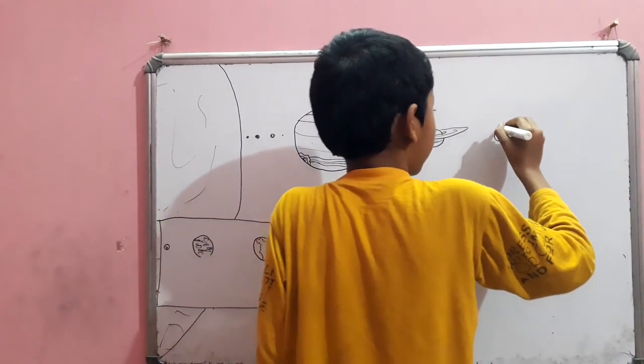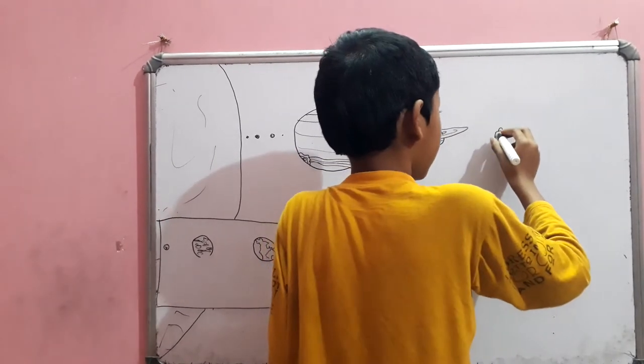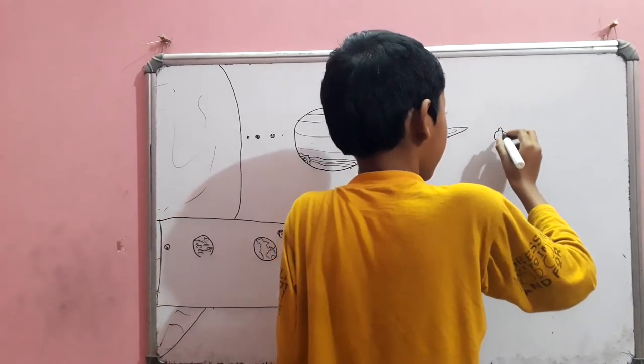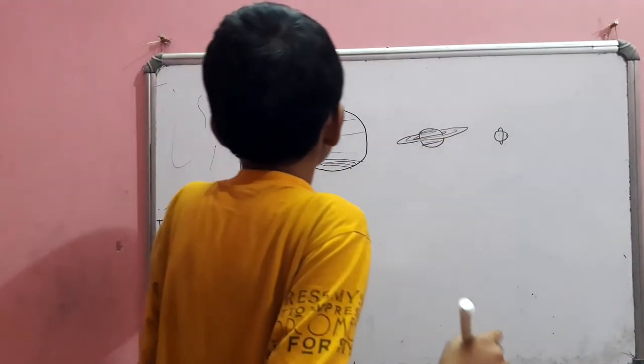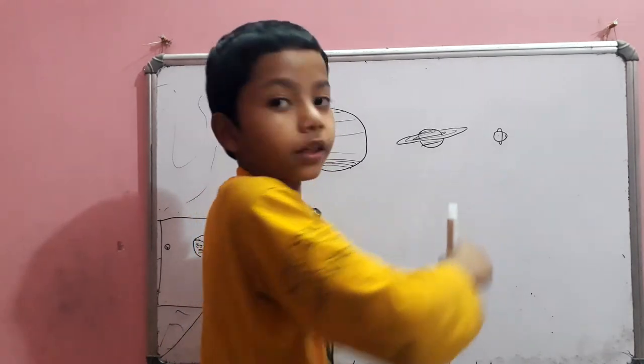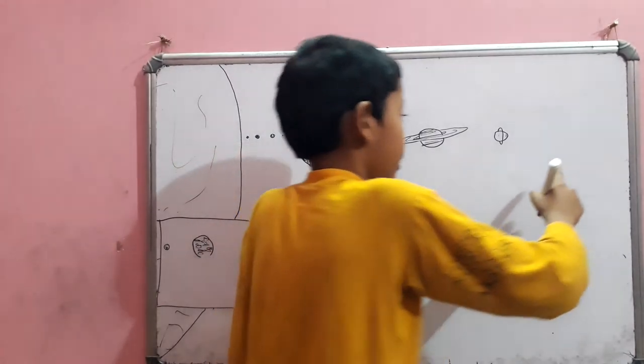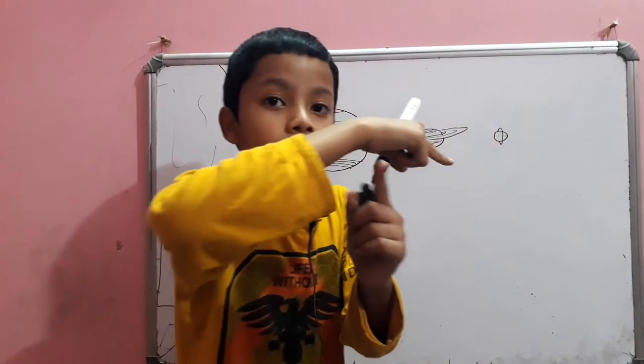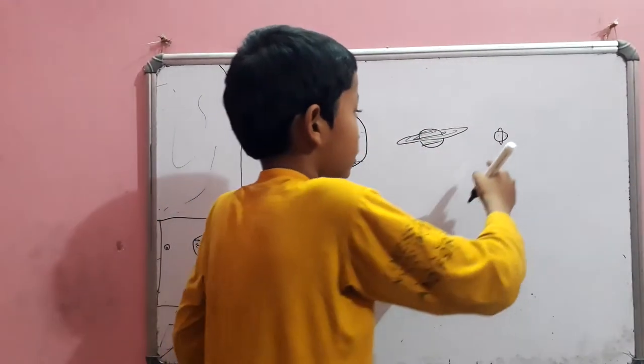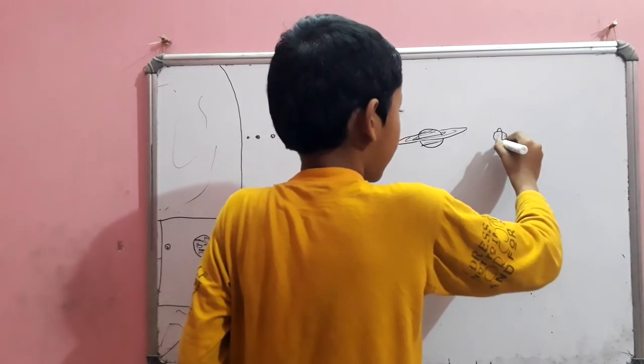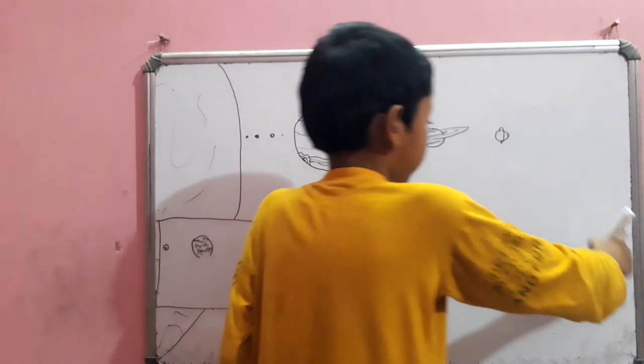So, this is Uranus. It is the seventh planet from the solar system. And, but the axis is tilted like this. Uranus axis is tilted sideways. That's why it looks like this.